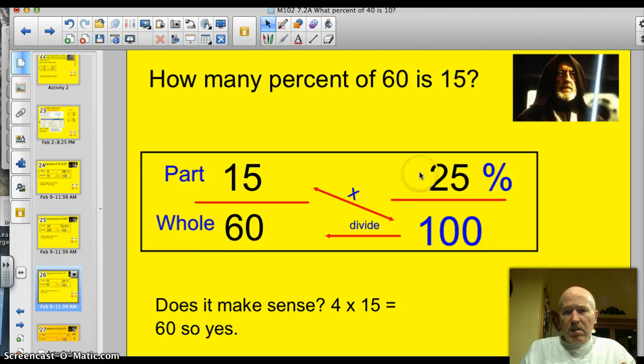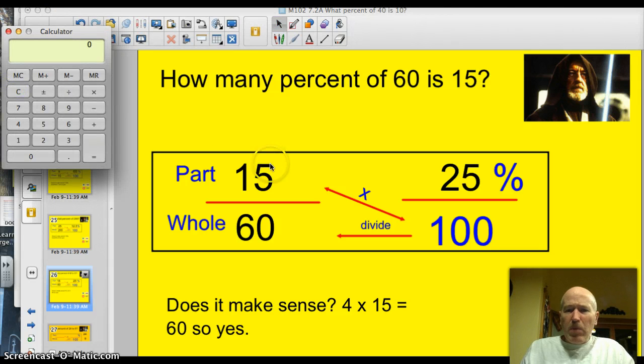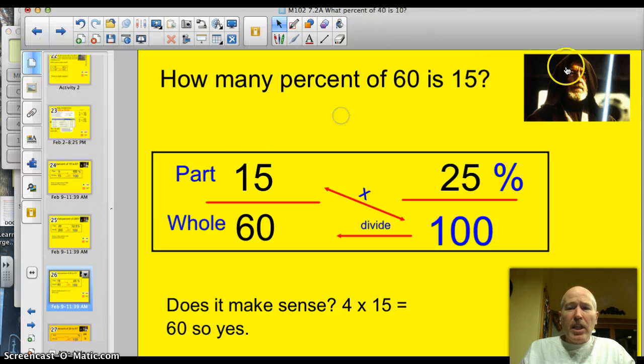Let me put the answer up there and then check to see if it makes sense to me. 15 over 60, 25 over 100. Well, does the answer make sense? Yeah. We've got 4 times 15 is 60, so 15 has got to be a quarter of it. I can check my cross products. 15 times 100 is 1,500, but is 60 times 25 going to be 1,500? 60 times 25 equals... Yes! How did I manage to get that right?